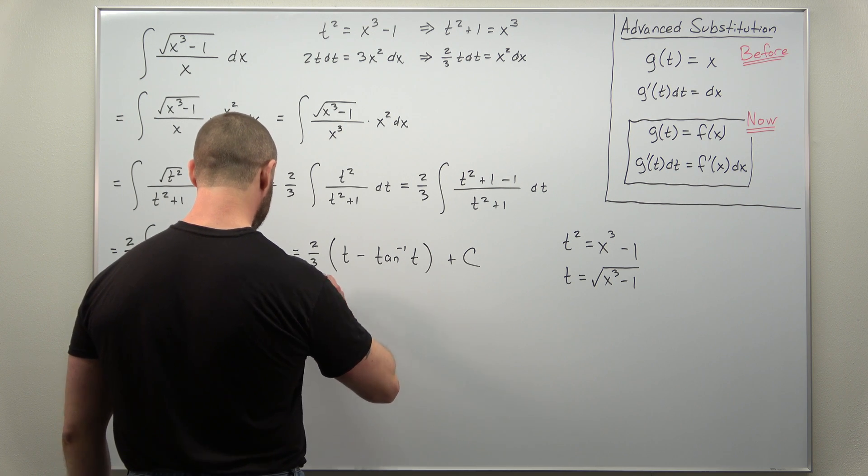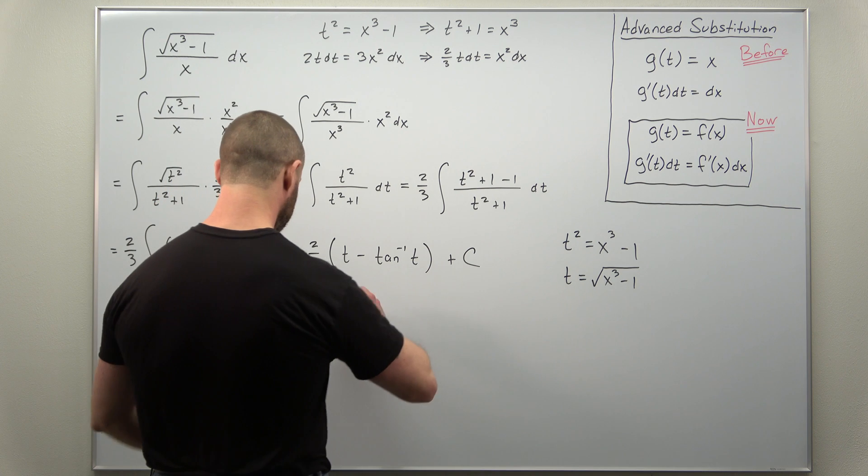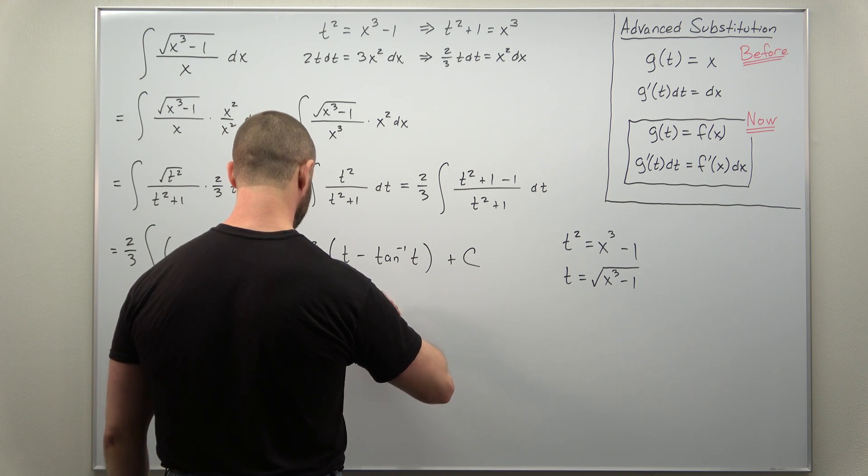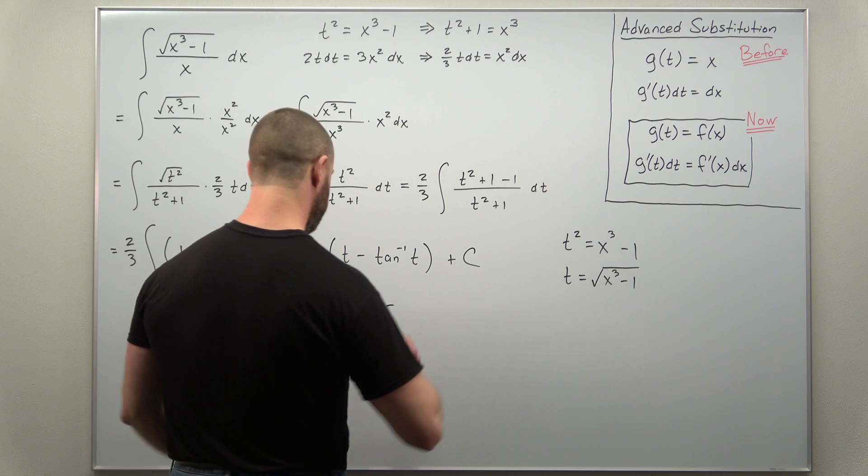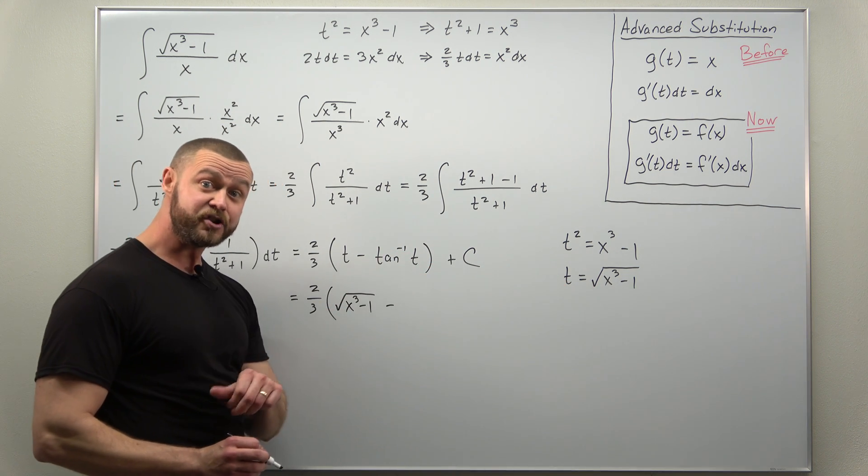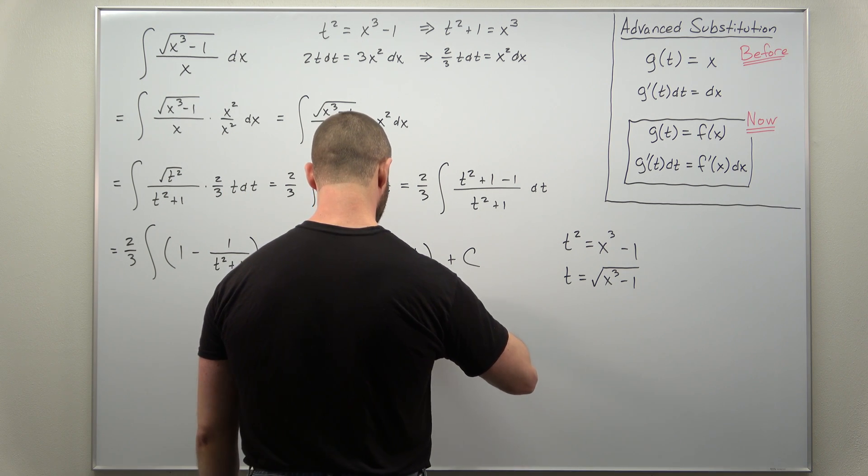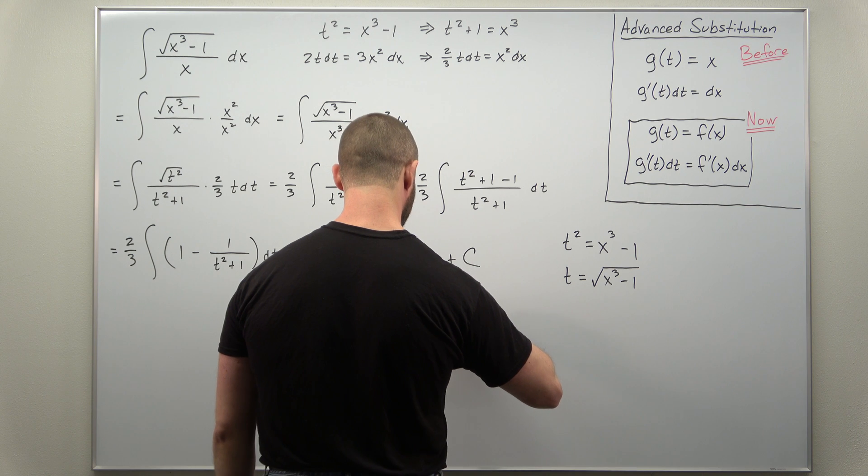And we get our antiderivative as two-thirds times the square root of x cubed minus 1, and then minus inverse tangent of t, inverse tangent of the square root of x cubed minus 1.